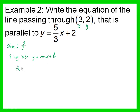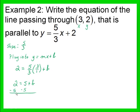So our y number is 2, our slope is 5 over 3, multiplied by the x number from our ordered pair, 3 over 1, plus b. The 3's cancel, and now we have 2 equals 5 plus b. Subtract 5 from both sides to find out what b is. So our equation will be y equals our slope 5 over 3, x, plus our b number, which is negative 3. This is our equation: y equals 5 thirds x minus 3.